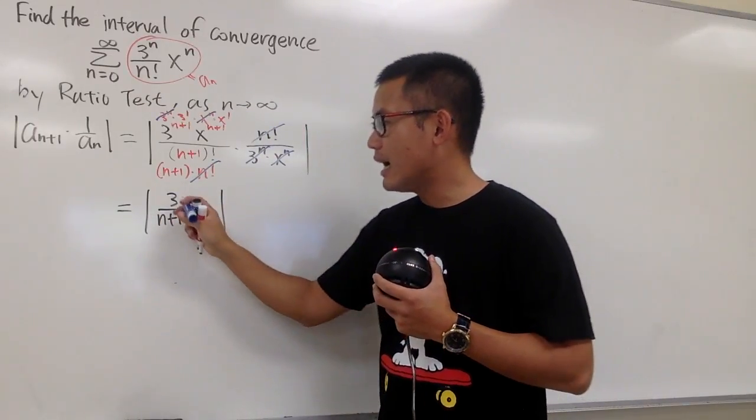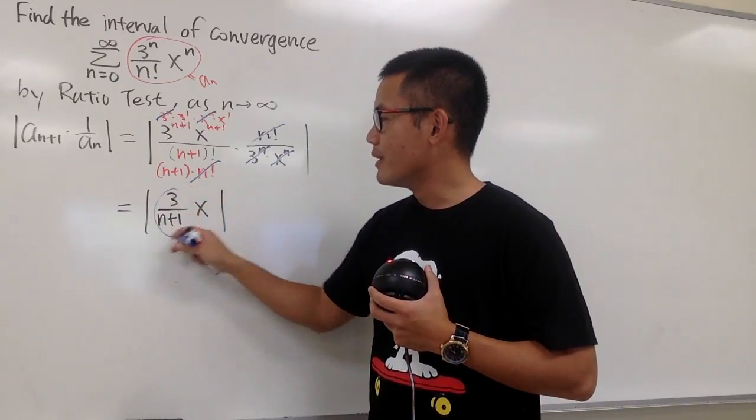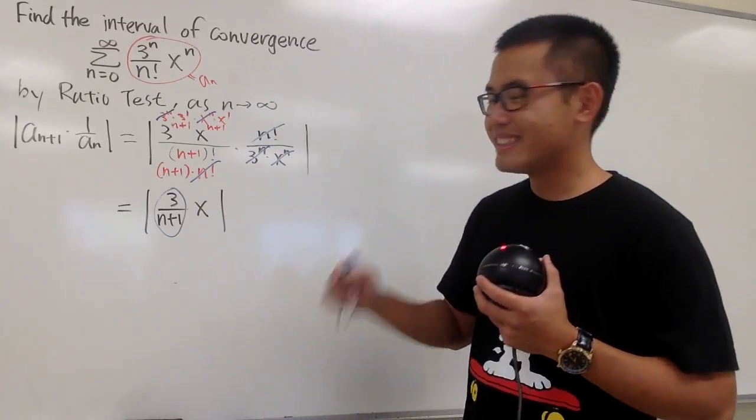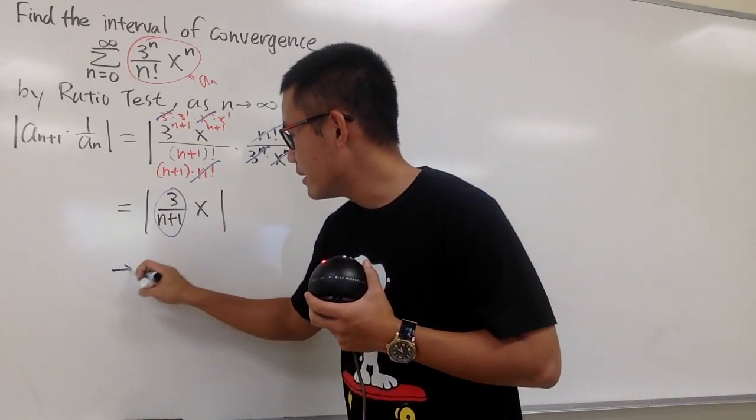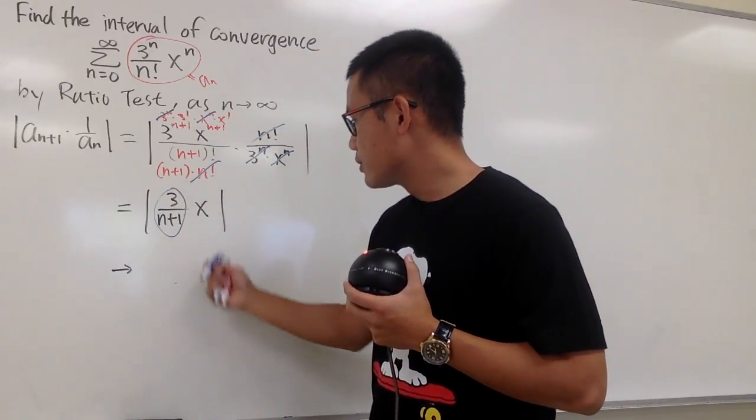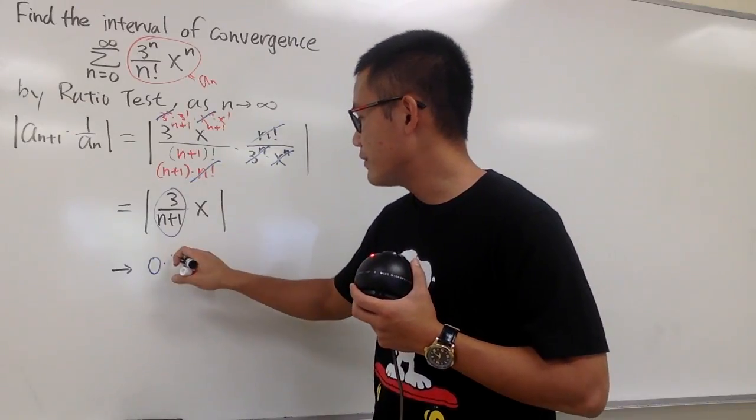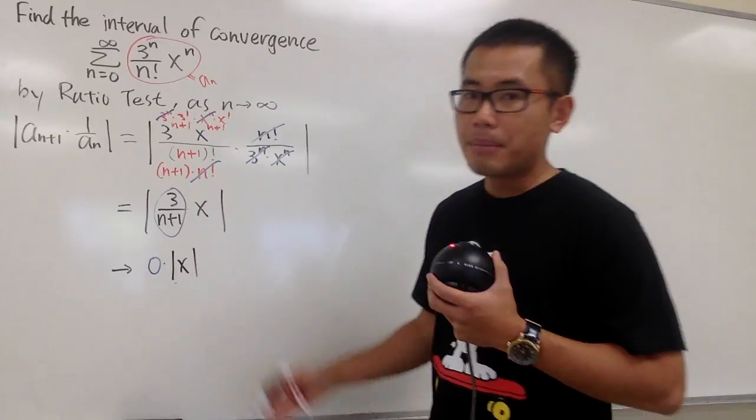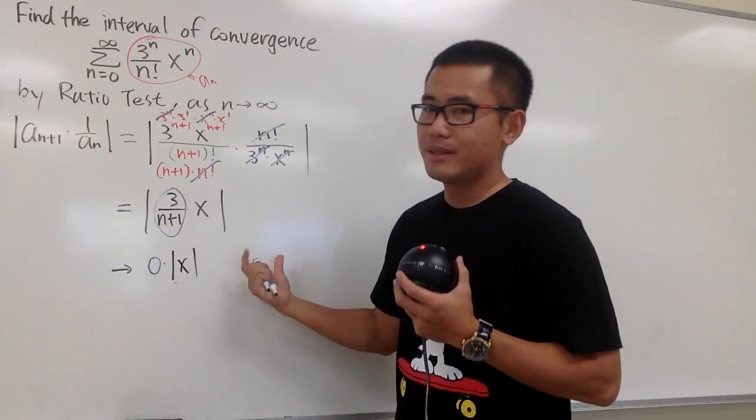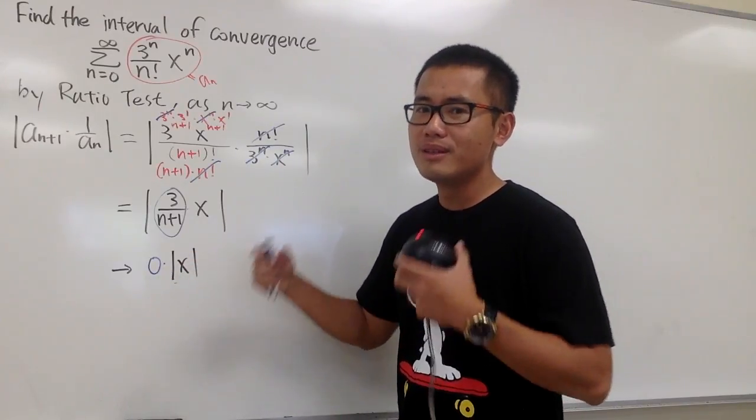Well, as you can see, on the top, we have 3, and this is n+1 on the bottom, so this term, it goes to 0. So, take the limit, that's why I draw the arrow. So, we will have 3 over infinity, so this is going to give us 0 times, we still have the x in the absolute value like this. But you see, in this case, this is the result of the limit, but 0 times absolute value of x, it's always going to be 0.